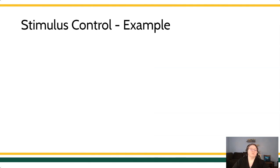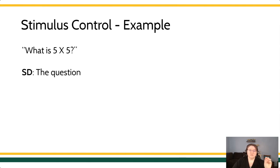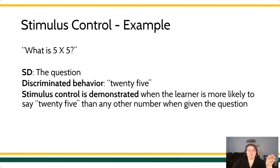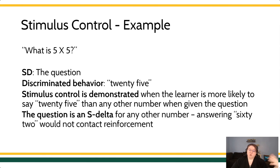If I were to present you the question, what is 5 times 5, this particular question is a discriminative stimulus for one response only — it sets the occasion for you to give the answer 25. You emit the verbal response 25, and the reinforcer would be me saying yes, exactly, that's correct. Stimulus control is demonstrated when the learner is much more likely to say 25 in the presence of that question than any other number, because stimulus control means a behavior is much more likely in the presence of the stimulus than in its absence. This question is an S-delta for any other number — if you say 42, that answer would not contact reinforcement.